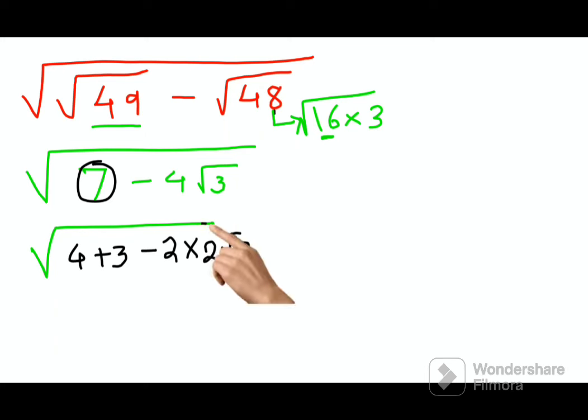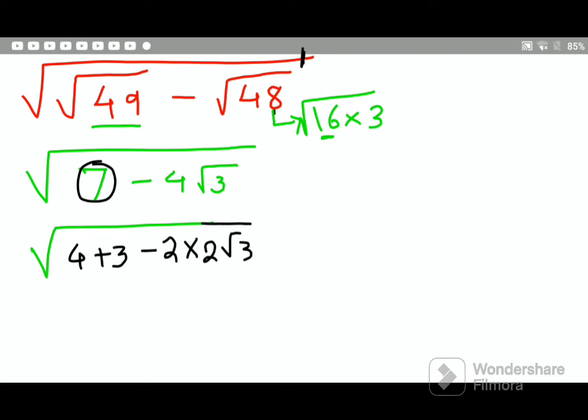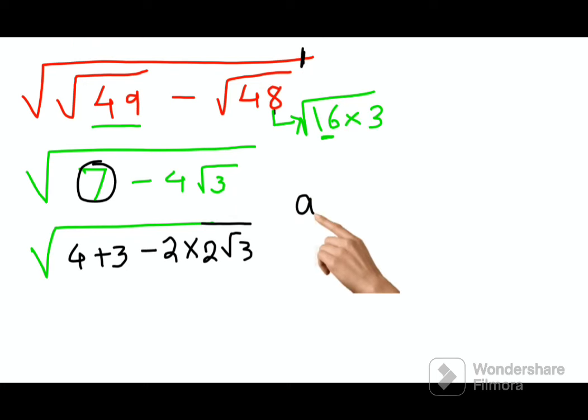See why am I doing that? My main agenda is to get rid of this big root. For me to do that I will have to write everything under the root as a minus b the whole square. Why minus? Now a lot of people might wonder why minus, why not plus? Because there is a minus 2 inside the given equation.